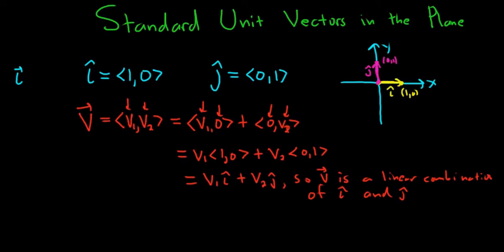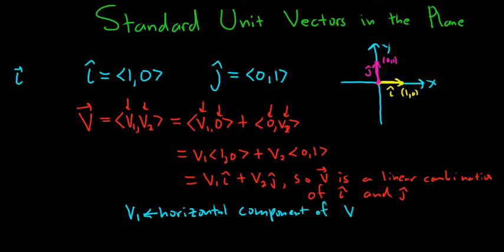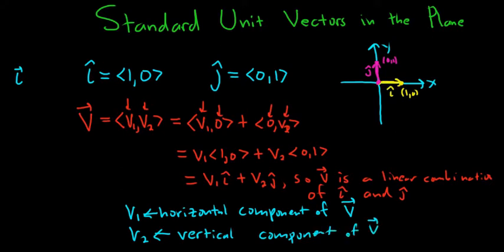V1 has a name in this case. You can think of v sub 1 as being the horizontal component of the vector v — it's like the x component, the first component. And you can think of v sub 2 as being the vertical component of the vector v.